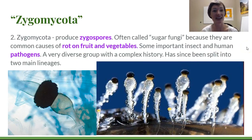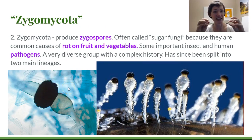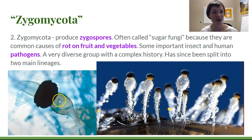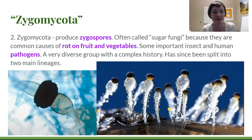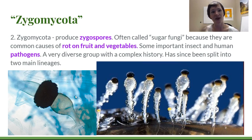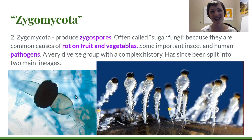Next is Zygomycota — another group that's not a real group anymore, but they all make this distinctive zygospore: a huge, warty structure with many nuclei inside where nuclei fuse together, then meiosis happens, and they become haploid again. This structure occurs in all these groups, so they are classified as the Zygomycota. They're often called sugar fungi because they're common causes of rot on fruit and vegetables. When you have bread, strawberries, or tomatoes that get moldy, those molds are often Zygomycetes — though they might also be Ascomycetes, so you'd need a microscope to really tell.